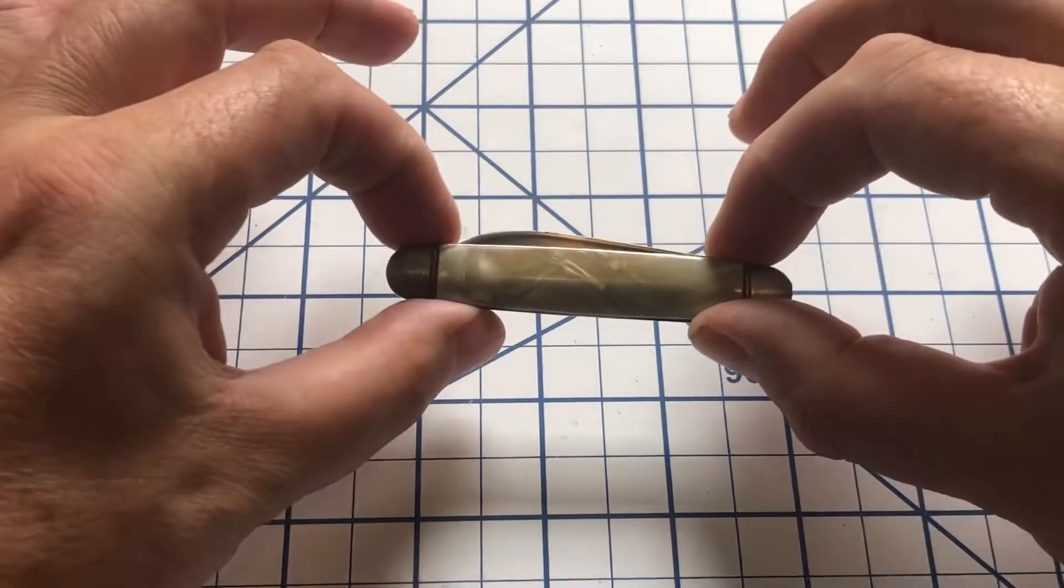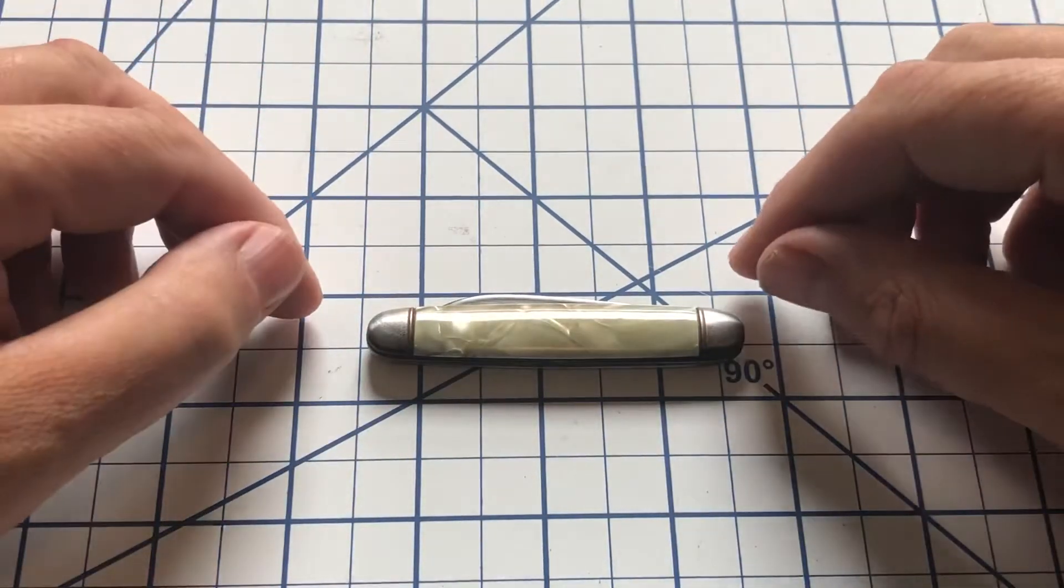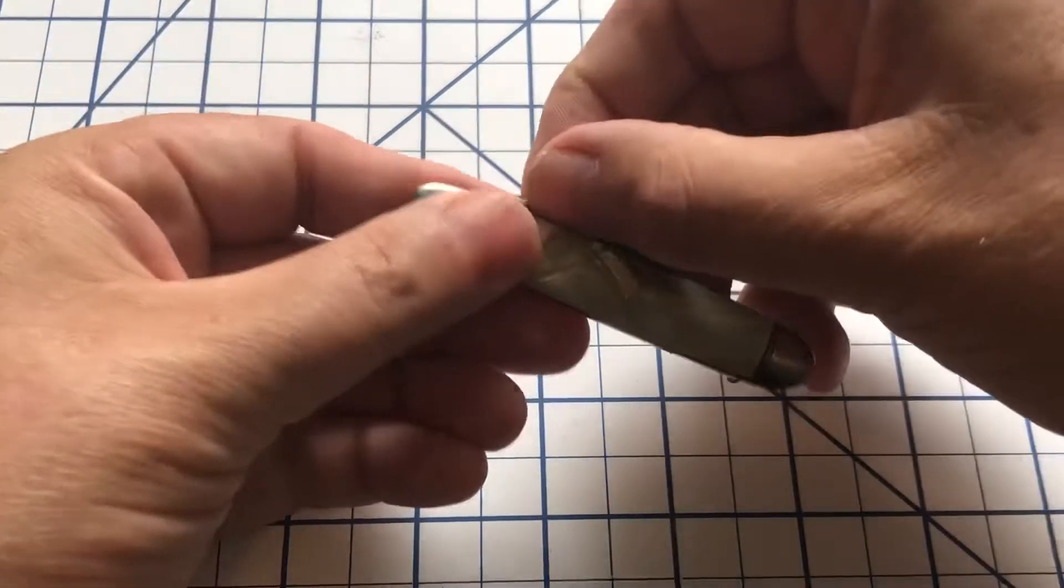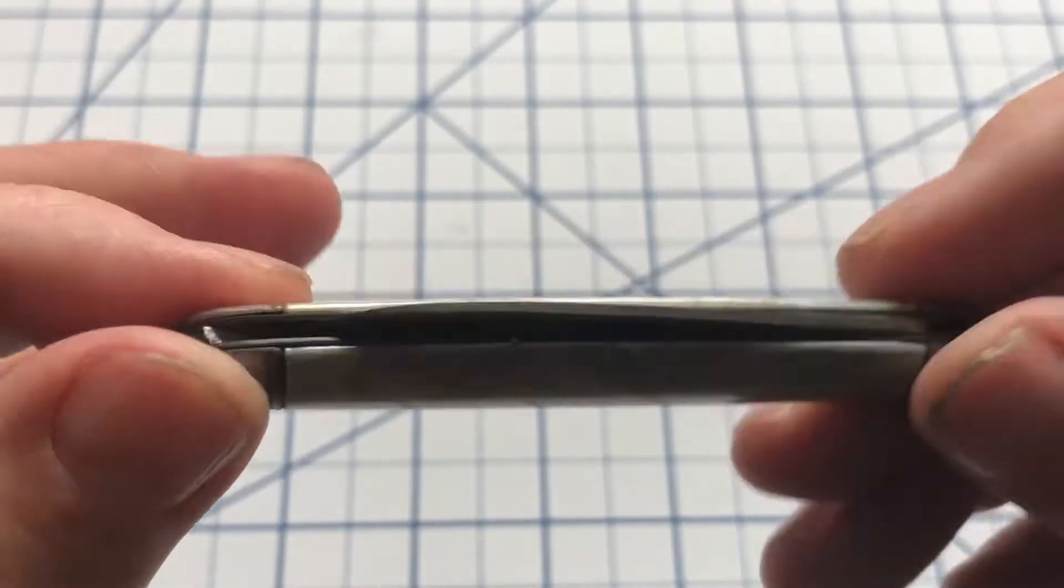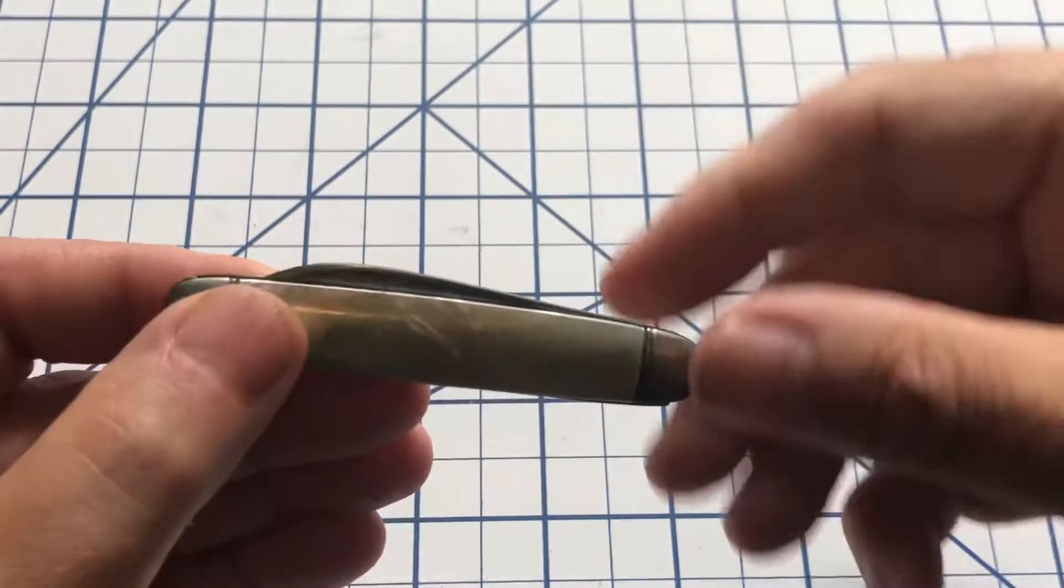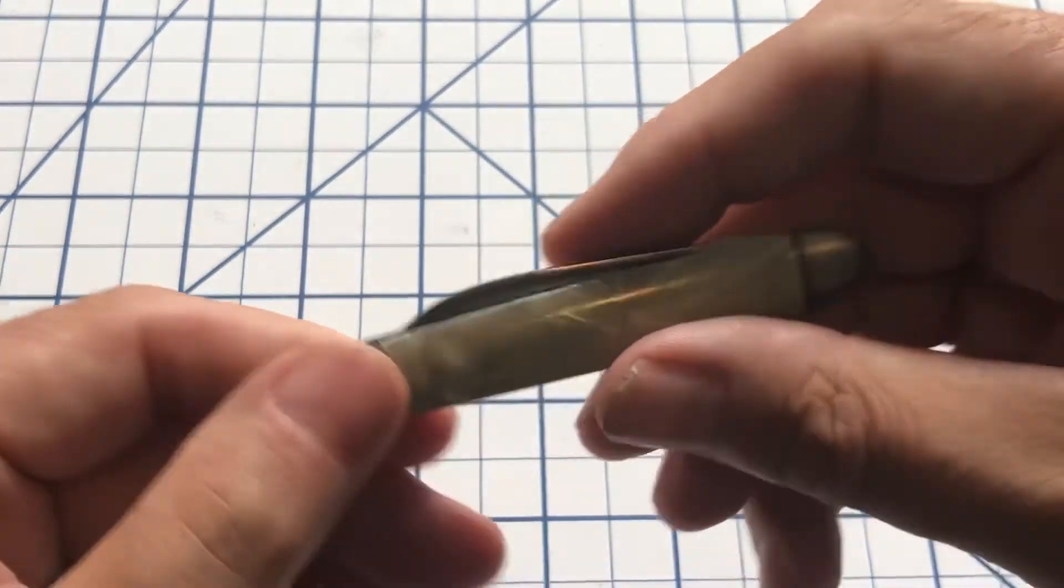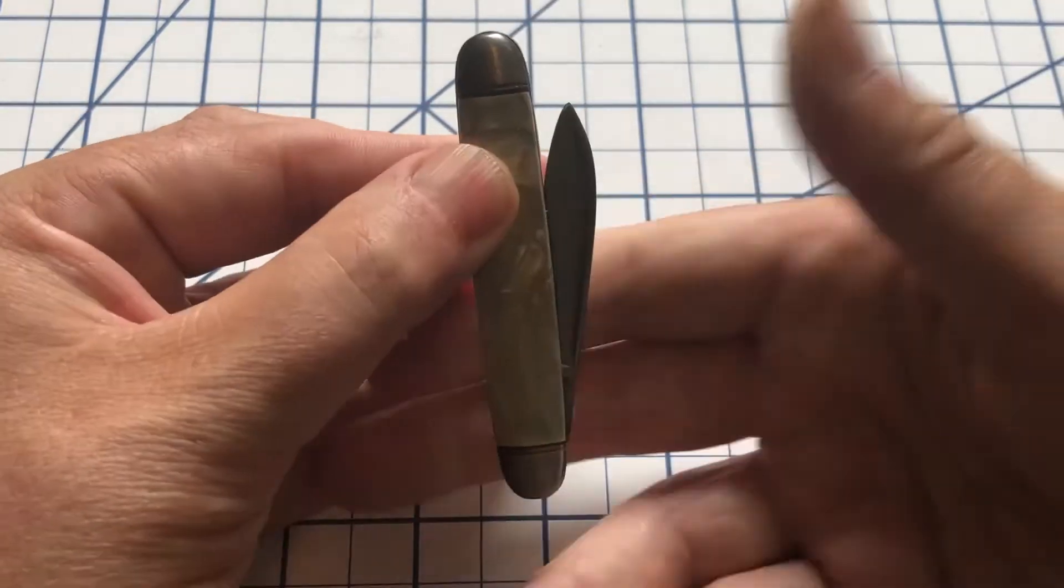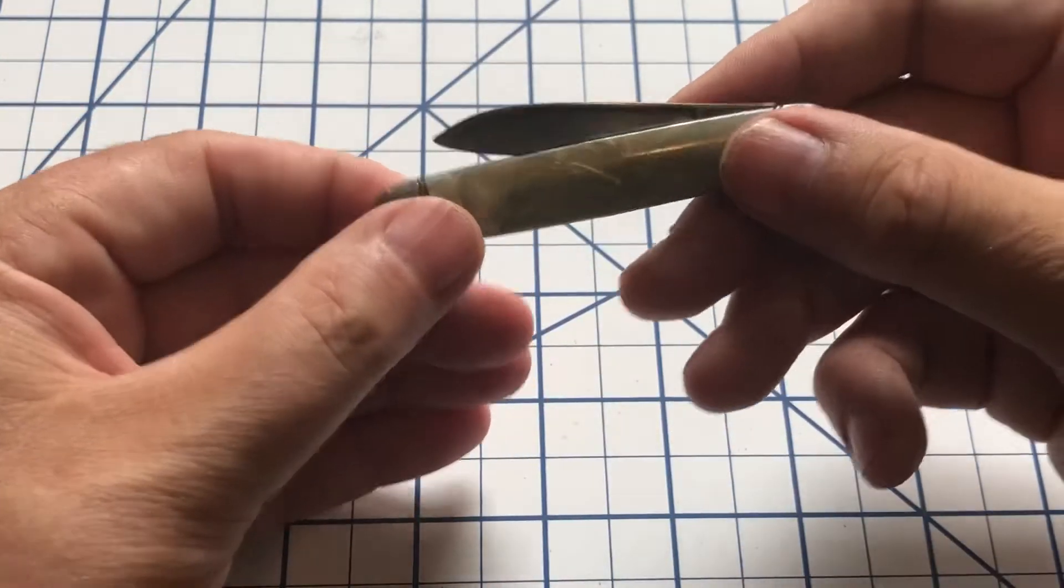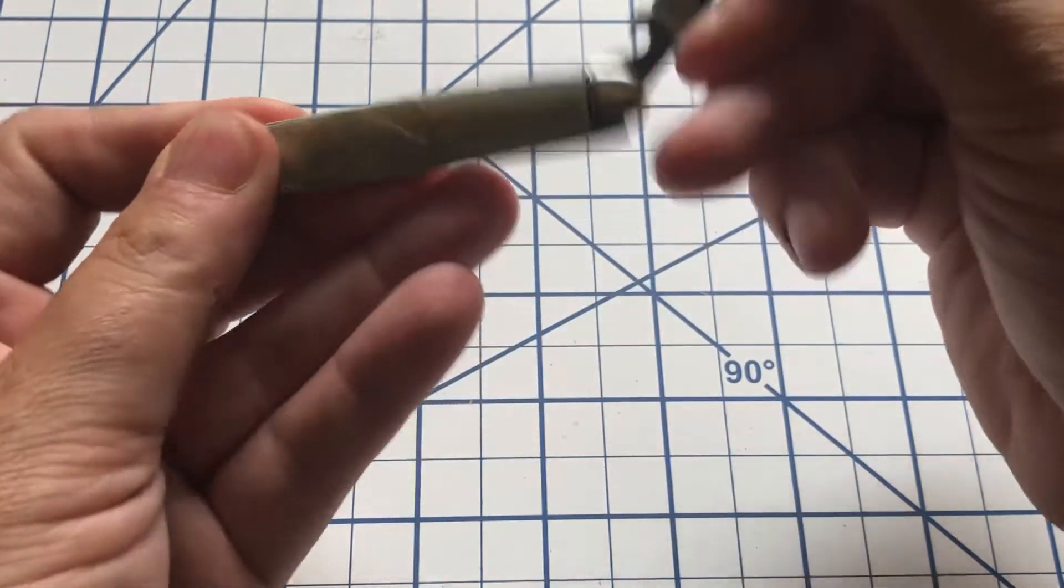And this one has a trick opening mechanism, which I think is kind of cool. Alright, you'll notice there is no nail nick on this and you cannot just pull this out. What you have to do is tip it so that the tip is up, press, and it pops open. You can then open it up.